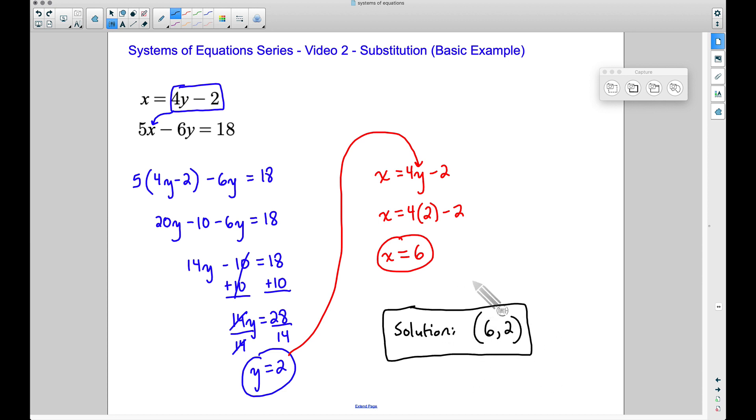And before we end this video, what you need to be doing with these problems as you start working them out, you need to check your work. So let's do that right now. 4 times Y minus 2 should be equal to X. 4 times Y, our Y value is 2, 4 times 2 is 8, 8 minus 2 gives us a value of 6, and notice X is equal to 6. Perfect, it works for the first equation.